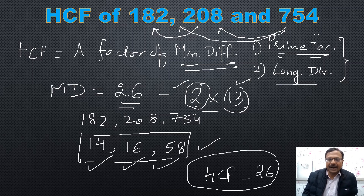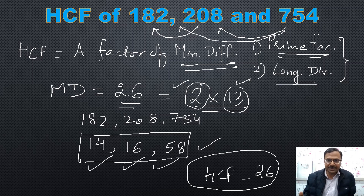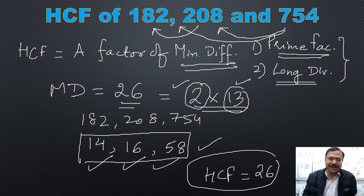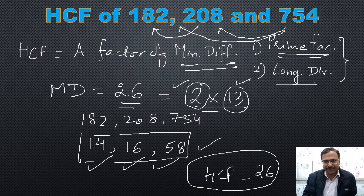Mind you, if any of the factors does not divide all three numbers, you have to eliminate it from the list of factors of the minimum difference. Only the remaining factors that divide all three numbers are taken into consideration when finding the HCF. Isn't that amazing? I don't think you must have learned this method anywhere except this channel.